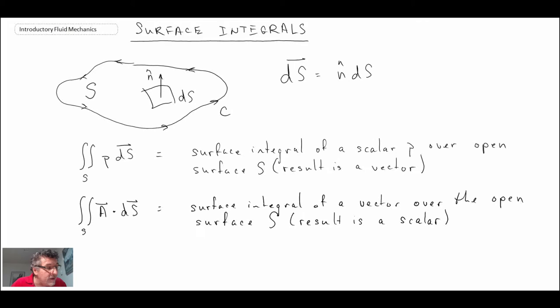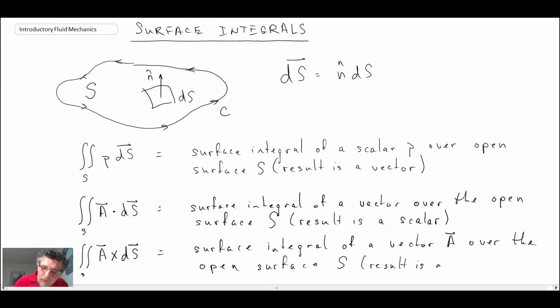If the mathematical operator that we're dealing with involves the cross product, so in that case we would be doing a surface integral of a cross dS, where dS is the area vector. So if we're dealing with a vector and we have the cross product as being our operator, the result will be a vector of our surface integral.